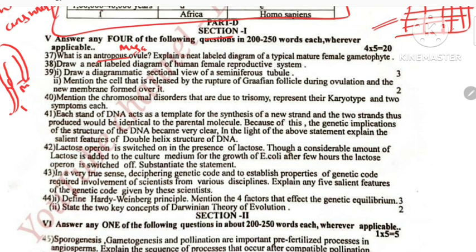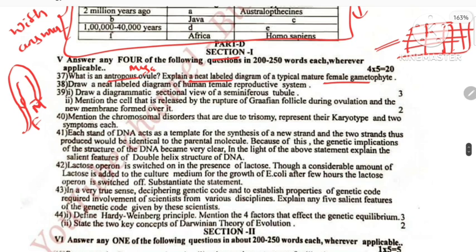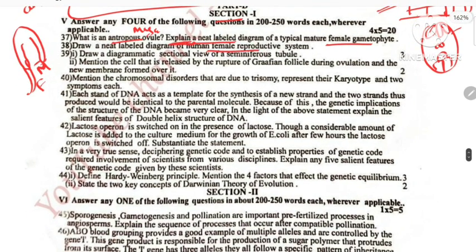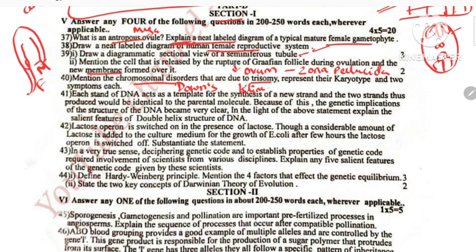Micropyle end and funicle are at one end — that is the anatropous ovule. The female gametophyte is an 8-nucleate labeled diagram. There is Down syndrome — trisomy of 21 — and Klinefelter syndrome. Klinefelter trisomy is XXY, so there is one extra chromosome. Down syndrome is 21st trisomy and Klinefelter syndrome is a different karyotype.